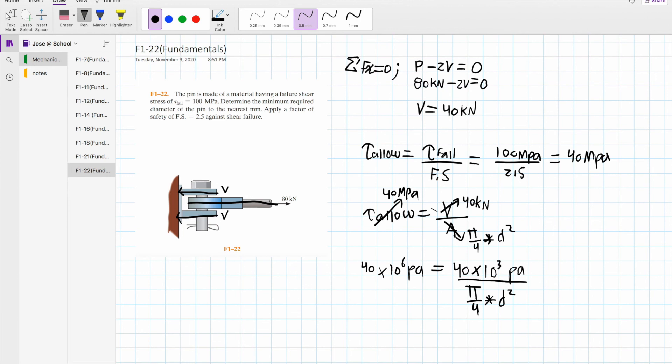Now we solve for the only unknown variable which is d, the diameter. And this is equal to 0.036 meters or 35.6 millimeters. And in this problem we want it in millimeters. So this is the final solution.